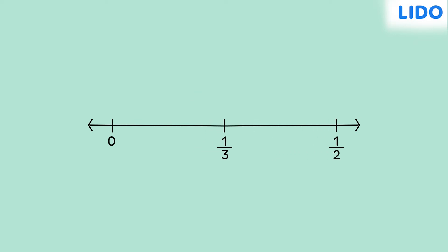Also, clearly, 1 by 3 is less than half. One way to find a rational number between these numbers is to find the number which is exactly halfway between these numbers.